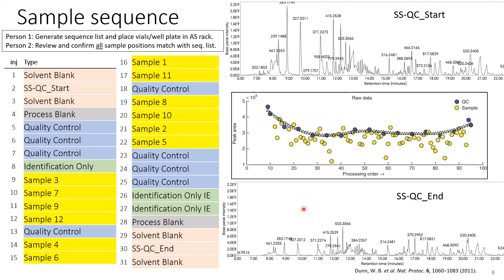Does the quality control have to be different from the samples, or does it need to be similar? The quality control could be any sample, but typically for best practice, it's a pool sample of your study. We take a little bit of all the samples into a pool. You could do that at the sample level before extraction, or after extraction.